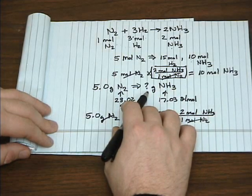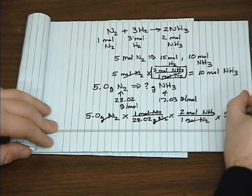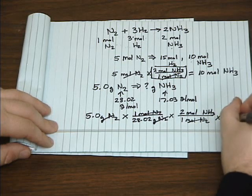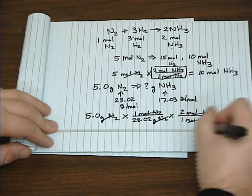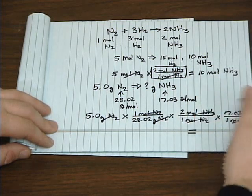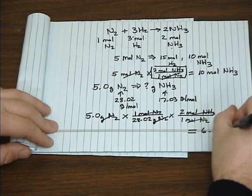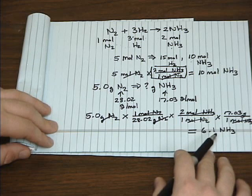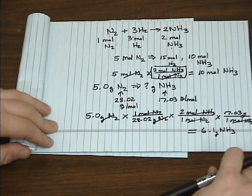And to get our answer in grams, we can use ammonia's molar mass. That's the unit we want, so we take our calculator and multiply and divide as needed, and we get 6.1 grams NH3.